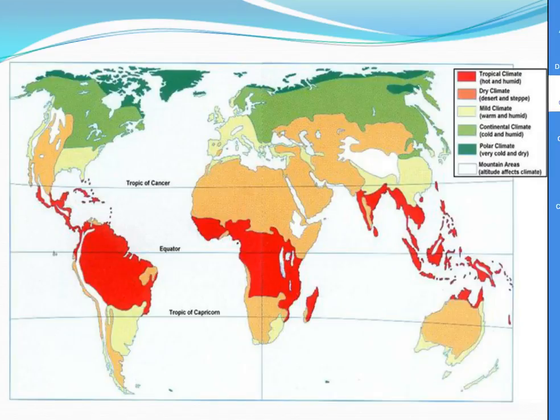Here you see a more modern or updated version of the classification system, which includes that extra region. It is similar to the Köppen classification, because you can see how climates tend to be more similar in vastly different areas if those areas are on the same latitude line. This map is also color-coded.